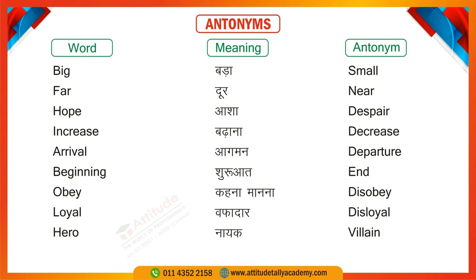Next one is 'Arrival' and 'Departure.' For example: The arrival time of the train is 8 o'clock in the morning and the departure time is 8:20 in the morning. Then 'Beginning' means start, and 'End' means finish. 'Obey' means to follow instructions, and 'Disobey' means to not follow. For example: I obey my parents, but my brother generally disobeys my parents. Next is 'Loyal,' meaning faithful — dogs are loyal. 'Disloyal' means not faithful.